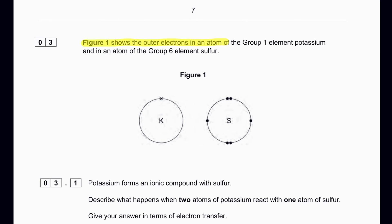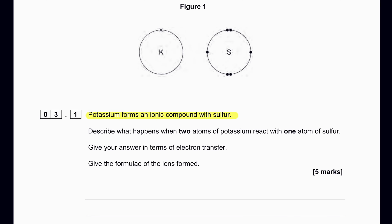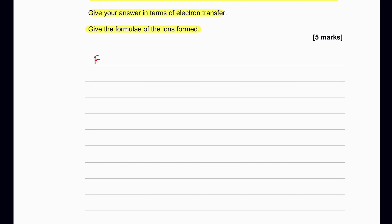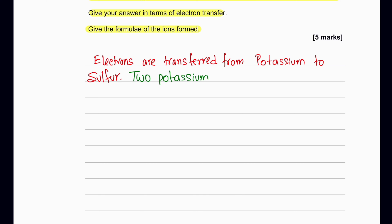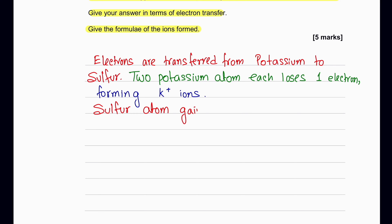Figure 1 shows the outer electrons in an atom of potassium (group 1) and sulfur (group 6). Potassium forms an ionic compound with sulfur. Two atoms of potassium react with one atom of sulfur: each potassium transfers one electron to sulfur, so two potassiums are needed because sulfur accepts two electrons. The potassium becomes K⁺ and the sulfur becomes S²⁻.